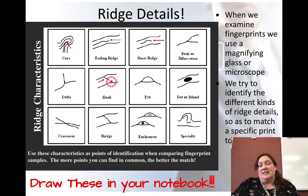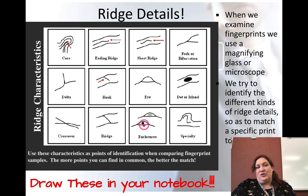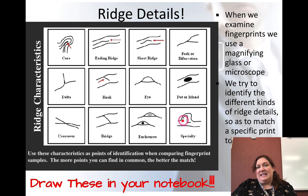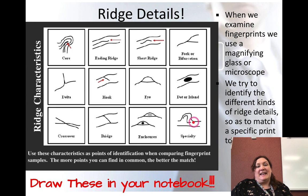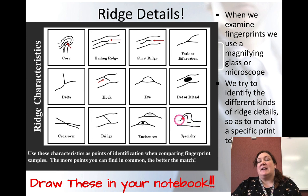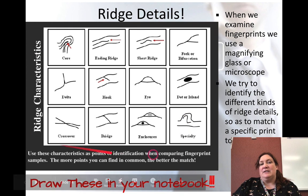Crossovers are named because two lines cross over each other. A bridge is like a hook that doesn't stop — it goes all the way between two horizontal lines as a vertical bridge. Enclosures are like an eye but with a dot or line inside it, creating a unique shape right in the middle of the print. All of these ridge details make it much easier to identify and match prints.